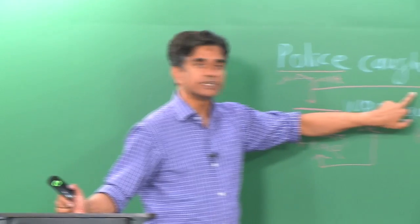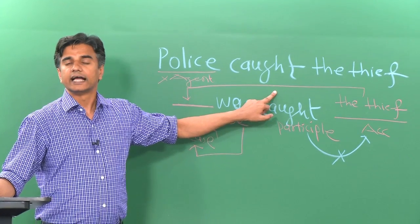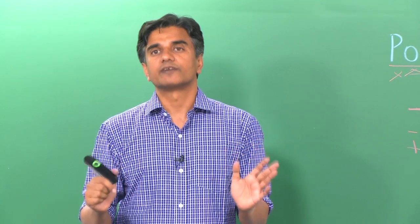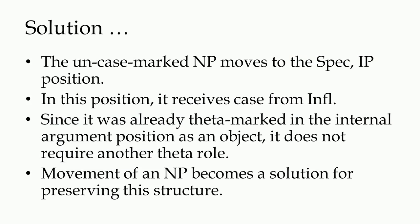This displacement happens at the deeper structure of the underlying patterns, and it is figured out by the human mind as part of its normal acquisition of patterns. Once the movement takes place, everything falls into place. Therefore, we say that displacement of elements from one position to another in natural languages is a required phenomenon — and such displacement, happening at a deeper level of representation, helps us understand the level from which human mind internalizes underlying patterns of language.